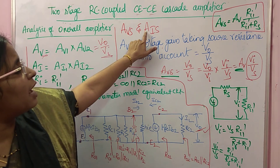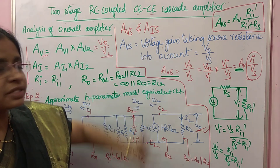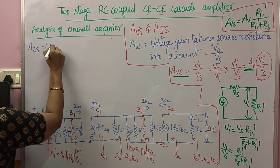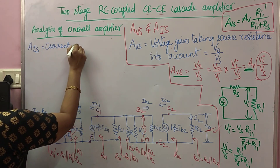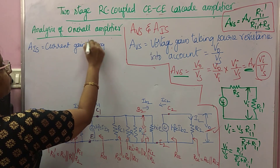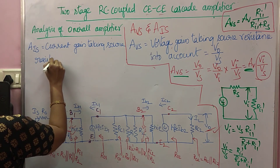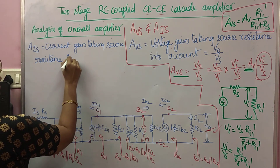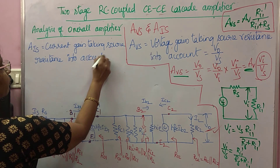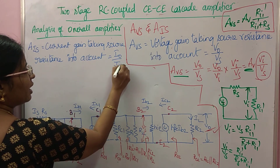In the same way we have AIS — the current gain taking source resistance into account. AIS is I0 divided by IS.